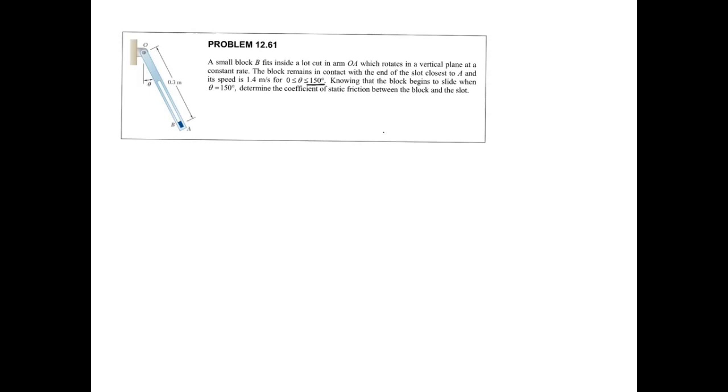So for this question, it's asking us when the angle is 150, so the drawing is not actually representative of the moment in time that we're looking at. So if we redraw the moment that we're looking at, it means that we have this arm here OA, and the block is here. The wall would be here, this angle would be 150, and this angle here would be 30 degrees.